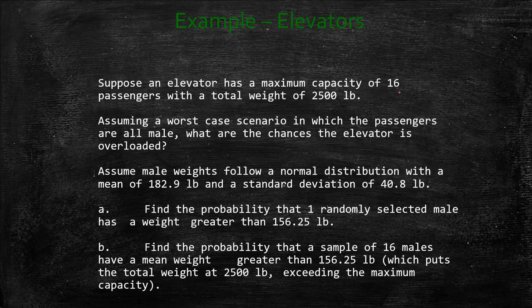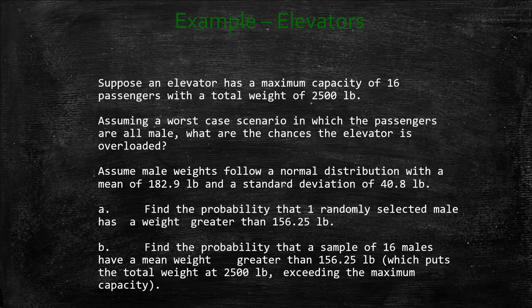So let's get to it. Suppose an elevator has a maximum capacity of 16 passengers with a total weight of 2,500 pounds. Assuming a worst-case scenario in which the passengers are all male. Assume male weights follow a normal distribution with a mean of 182.9 pounds. So that's our mu. And it has a standard deviation of 40.8.